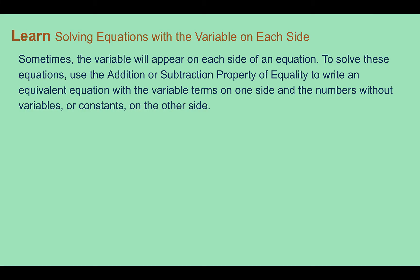Solving equations with a variable on each side. Sometimes the variable will appear on each side of the equation. To solve these, use the addition or subtraction properties of equality to write an equivalent expression with the variable terms on one side and the constants on the other. We're going to apply what we did for solving equations — this time, adding and subtracting with the variable.